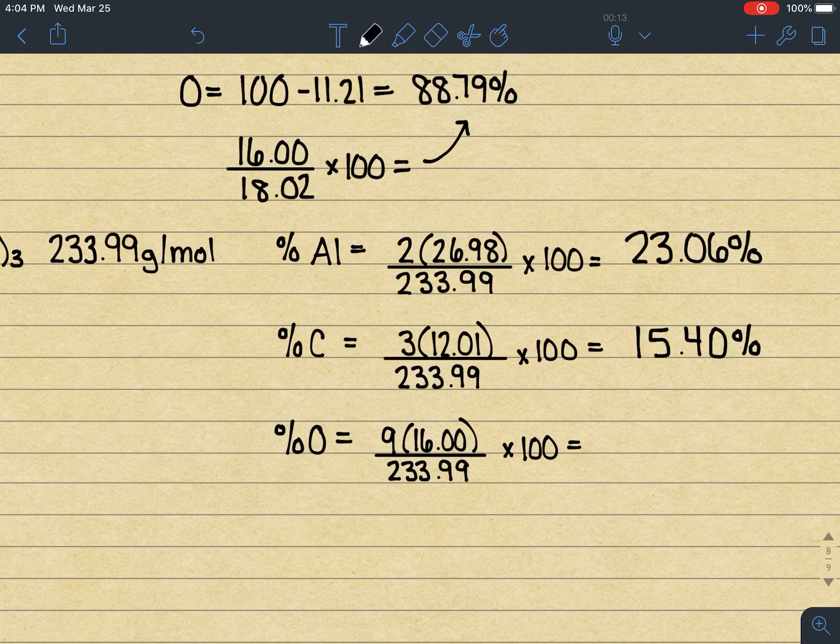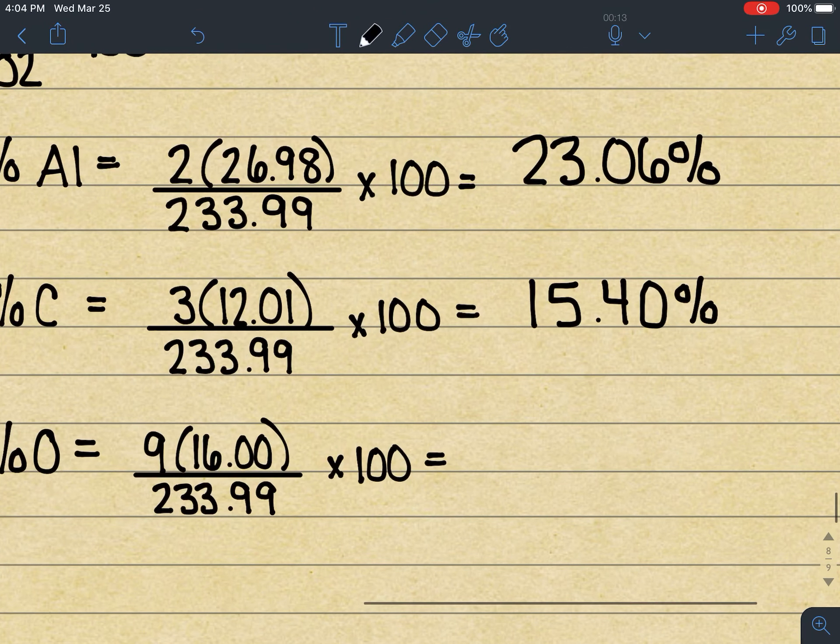And again, at this point, if we wanted to just add those together and subtract that from 100, we can. I'm going to go ahead and follow through on the math here. 9 times 16 divided by 233.99 times 100 gives me 61.54.